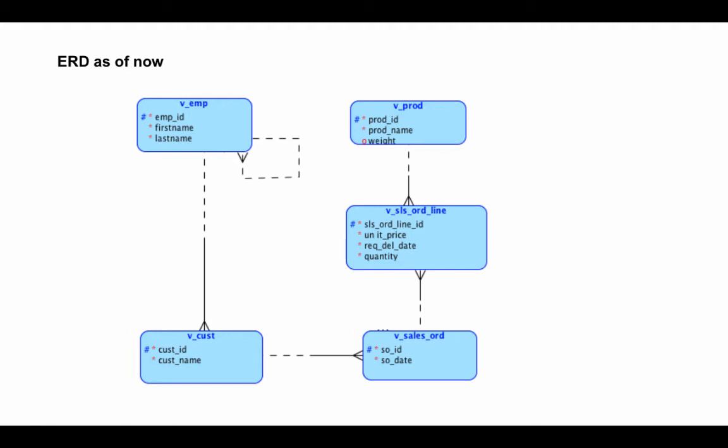When drawing your ER diagrams, it's a good idea to lay out the diagrams in a very simple, easy-to-follow manner. You don't want things all over the place with lines crossing each other. Try to organize your diagram so that lines don't cross. Also, you don't want diagonal lines — all lines should be horizontal or vertical.